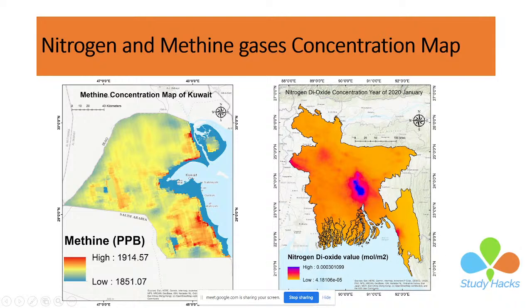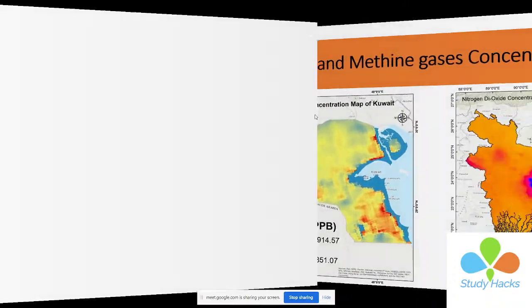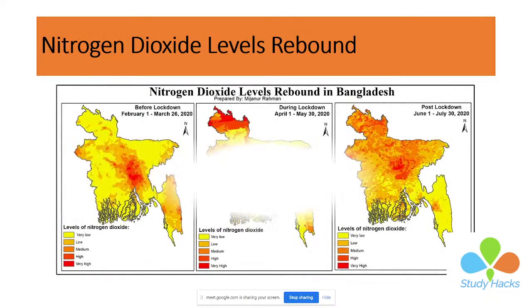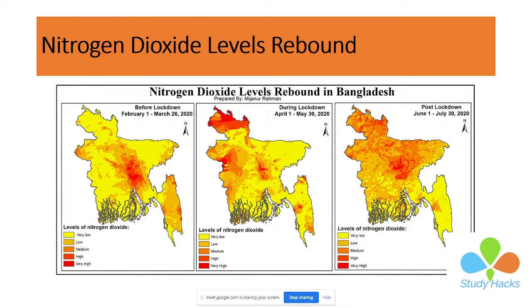We will convert units from one to another, then download the TIFF images and make map layouts using ArcMap software for research papers and presentations. You can also see another map showing nitrogen dioxide level rebound — observing different time periods: before lockdown, during lockdown, and the rebound in Bangladesh. We do all of this in Google Earth Engine, then download the TIFF images and make the map in ArcMap.